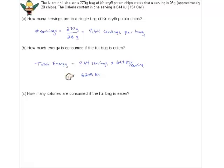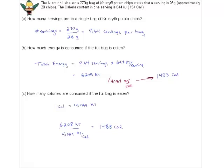How many calories is that? Divide 6,208 kJ by 4.184 = 1,483 calories. Your daily intake of calories for an average person is 2,000 - and that bag of chips alone is already 1,500 calories. That's a lot of calories just from chips, not even counting the bottle of pop you might drink alongside.